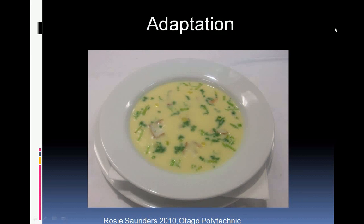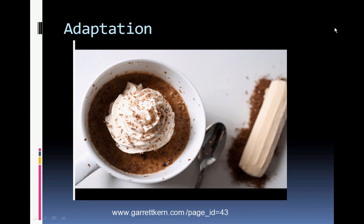We can also use adaptation of dishes. Cullen skink, the traditional Scottish dish made with smoked haddock, was taken by Rosie Saunders, who adapted the concept of a traditional Scottish soup to her food style using local Dunedin product and slightly refined it with the addition of truffle oil — taking an original idea and just slightly adapting it. Similarly, a coffee crème brûlée takes the basic idea of how you make a crème brûlée and adapts it to your environment, workplace, and food philosophy.